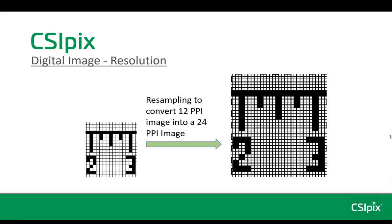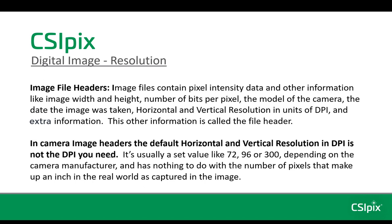This slide reinforces that resampling changes the number of pixels in an image. Now a brief explanation of image file headers: images contain pixel intensity data and other information like image width and height, the number of bits per pixel used to encode intensity, the model of the camera, the date the image was taken, and the horizontal and vertical resolution in units of DPI. This other information is called the file header.